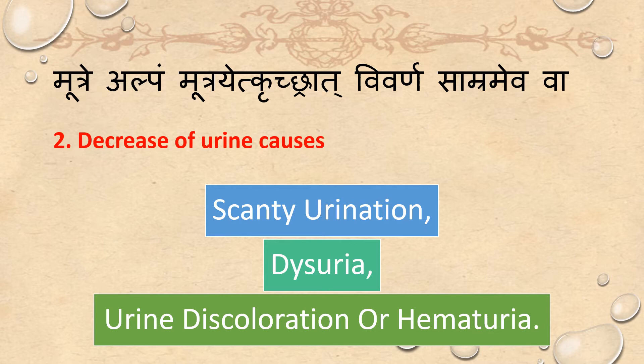Decrease of urine causes scanty urination, dysuria (Kricchrata), urine discoloration, or hematuria (Vivarnam).